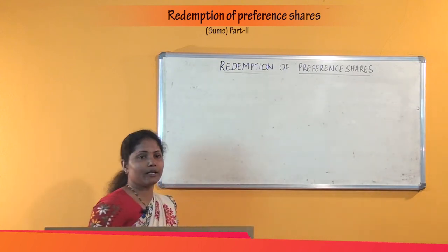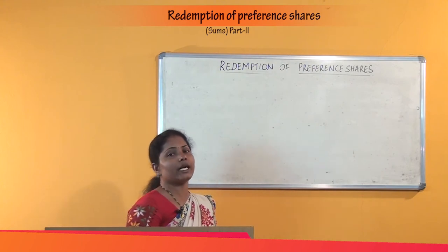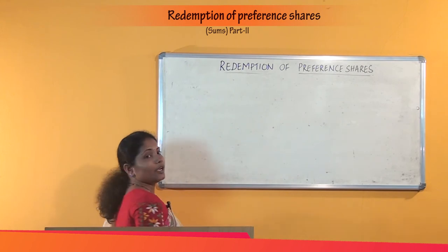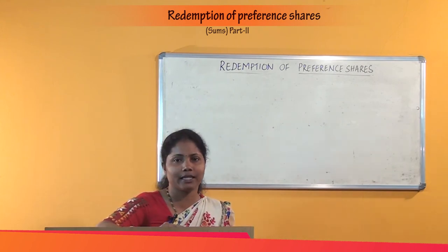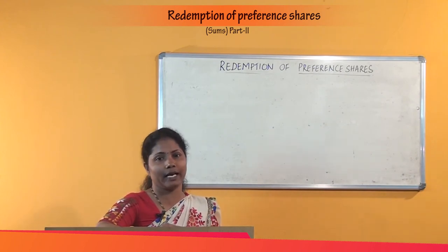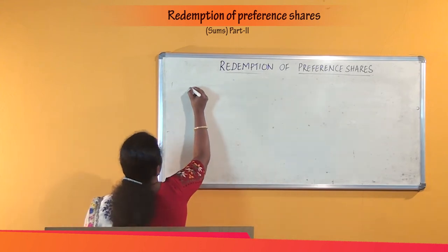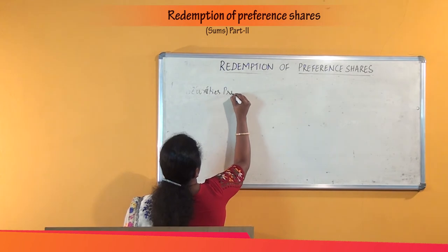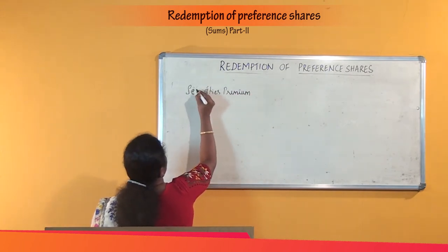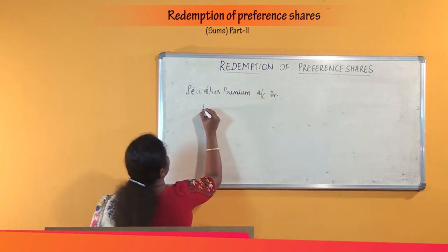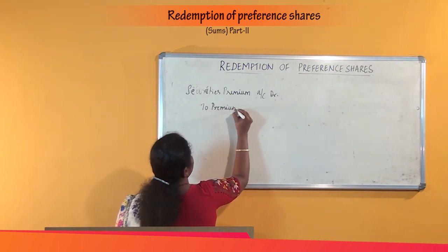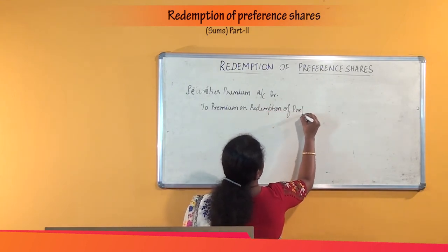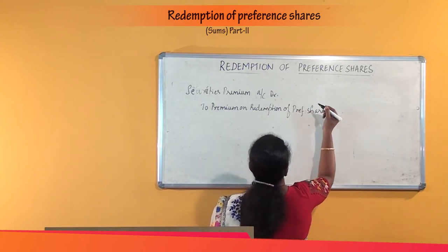Let us proceed to the second step — we have to create the provision for premium on redemption of preference shares out of Securities Premium and/or divisible profits. We have a Securities Premium Account balance of rupees 1,25,000 and the premium on redemption to be paid is only rupees 1 lakh, so the entire premium on redemption can be provided out of Securities Premium. The entry is: Securities Premium Account debit, to Premium on Redemption of Preference Shares Account.